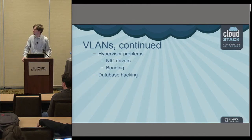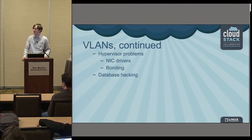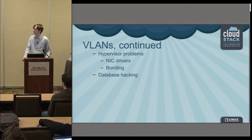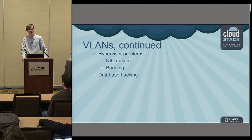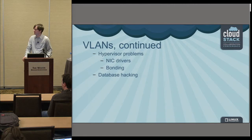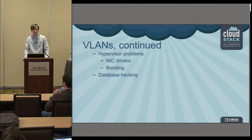Bonding adds complexity — however many NICs you add in bonding is just how much more trouble you can have. You might have multiple NICs supposedly working in concert but not actually doing so. Some NICs might be connected to the right switch port configured correctly and some may not. Be very careful with bonding, follow the hypervisor vendor recommendations, and check the CloudStack documentation to make sure bonding is set up correctly.